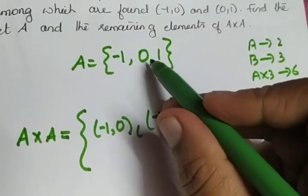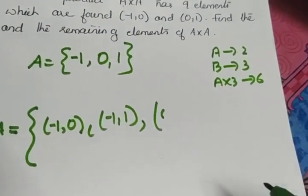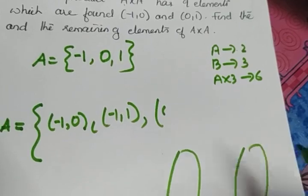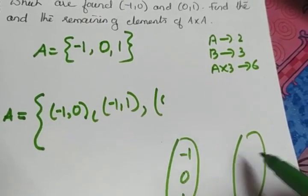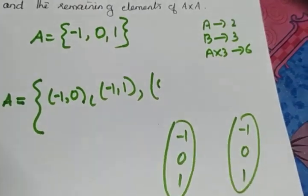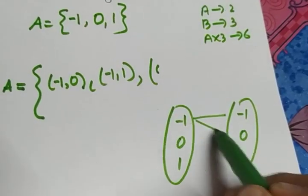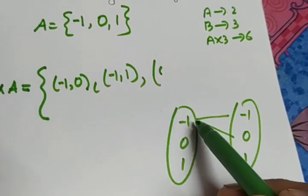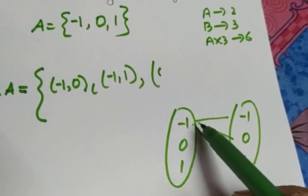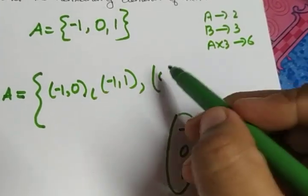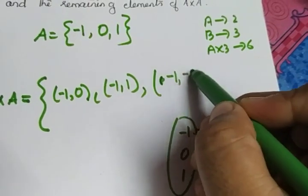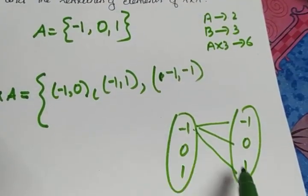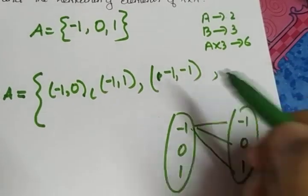If you find any difficulty writing A cross A, draw a set-to-set diagram: {-1, 0, 1} mapped to {-1, 0, 1}. Minus one must relate to all three elements: (-1,-1), (-1,0), (-1,1). We didn't write (-1,-1) yet, so we write it. (-1,0) and (-1,1) are already written.